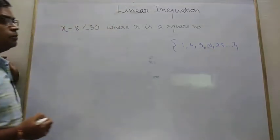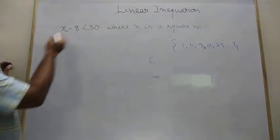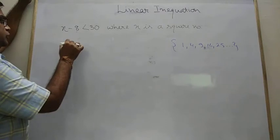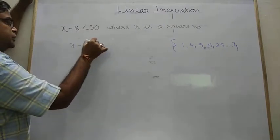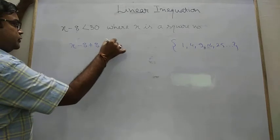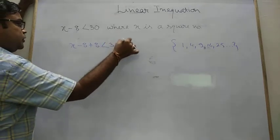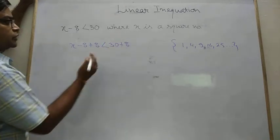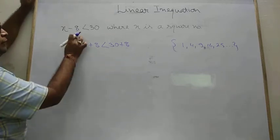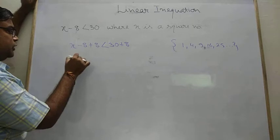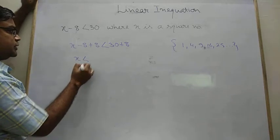But in this case when we start to solve the question x minus 8 plus 8, 30 plus 8. We are going to add plus 8 both side. So that we can remove this minus 8 from left hand side. So ultimately what we have x is less than 38.